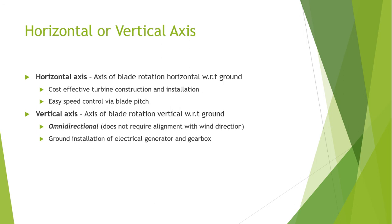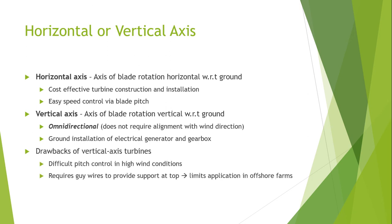In vertical axis wind turbines, ground installation of the electrical gearbox and generator is necessary, compared to horizontal axis wind turbines where the generator is mounted on top of the pole. The drawbacks of vertical axis turbines are that they have difficult pitch control in high wind conditions, require guy wires to provide support at the top, and this limits their operation in offshore applications because constant maintenance is required.